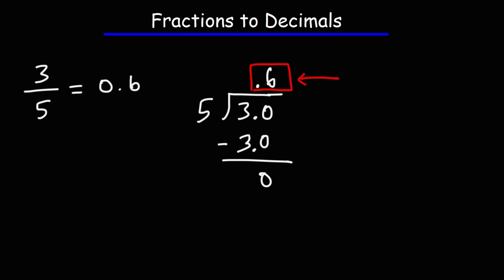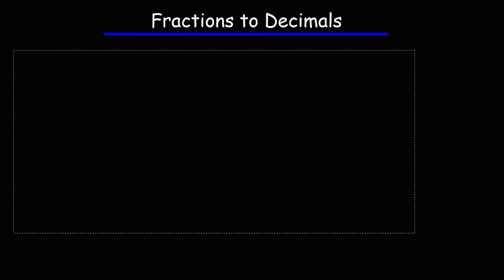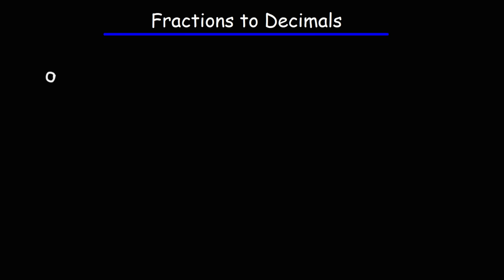Now let's work on some other examples. Let's try 9 over 20. If you want to pause the video to work on this example, feel free to do so. So we have a 20 on the outside, a 9 on the inside. Now 20 doesn't go into 9, so we need to add a 0 and a decimal point. Now let's treat 9.0 as if it's 90.